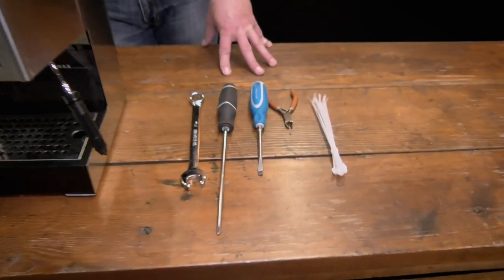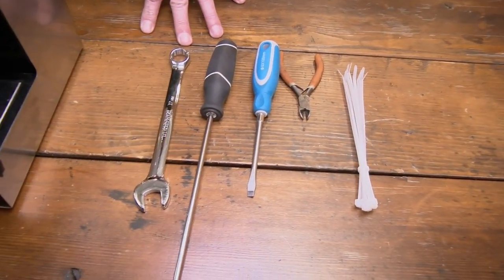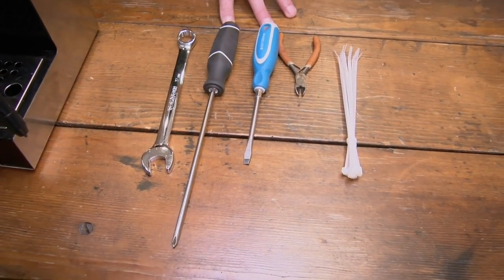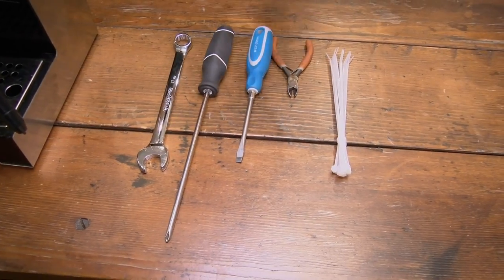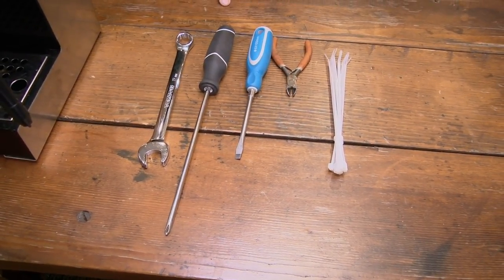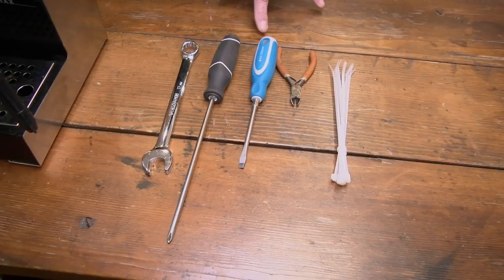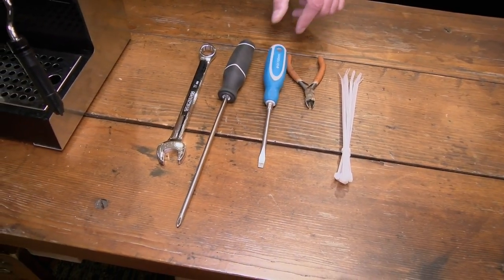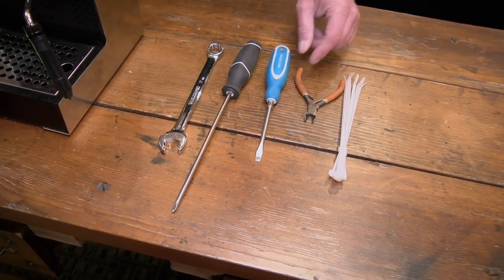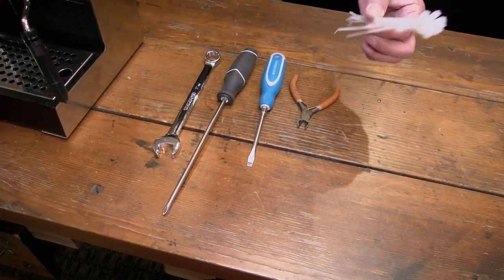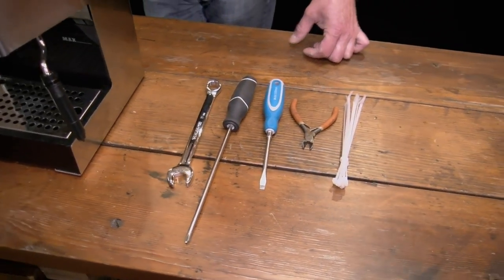The only tools you really need are a 17mm wrench, a Phillips screwdriver, doesn't really matter if it's long or has a magnetic tip or not, we're only taking out two screws on the top, a flat blade screwdriver, and a pair of little snips or anything to cut zip ties with. That's all you're going to need.